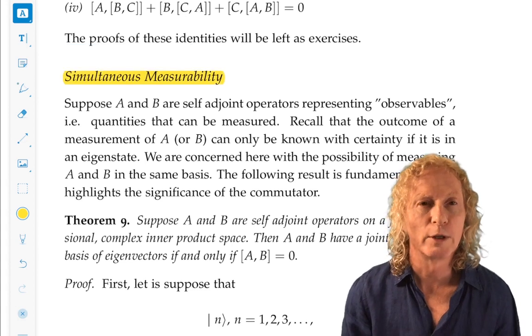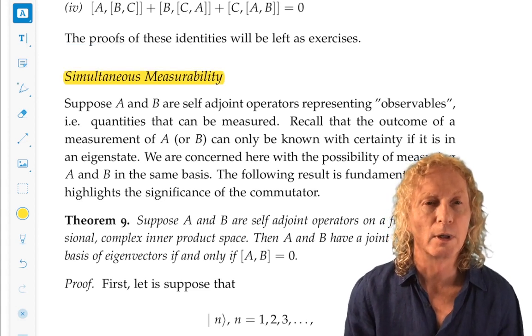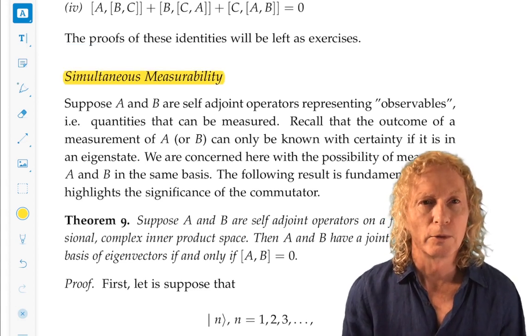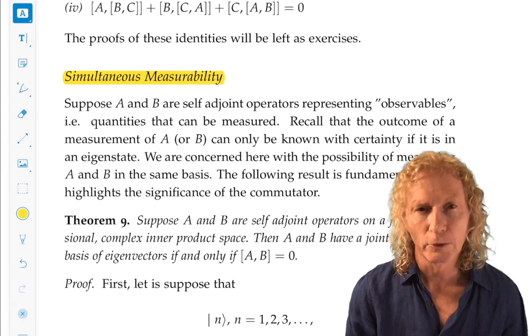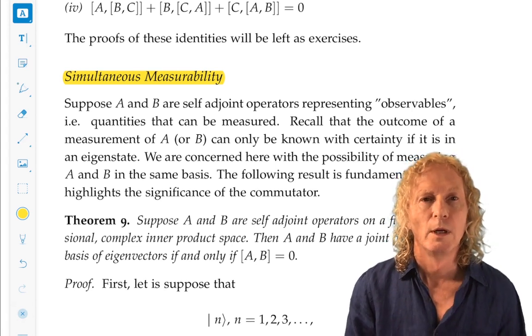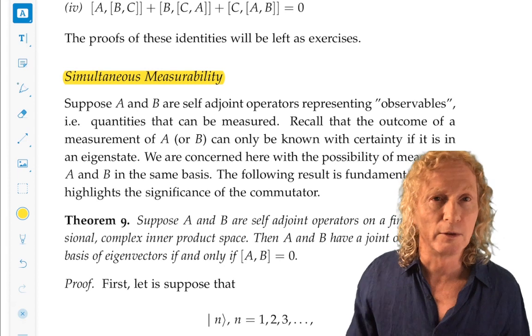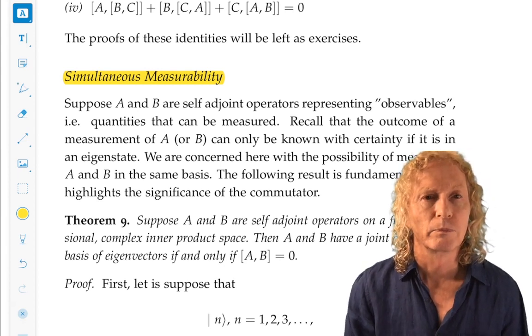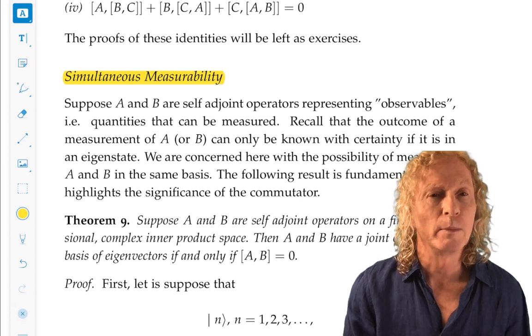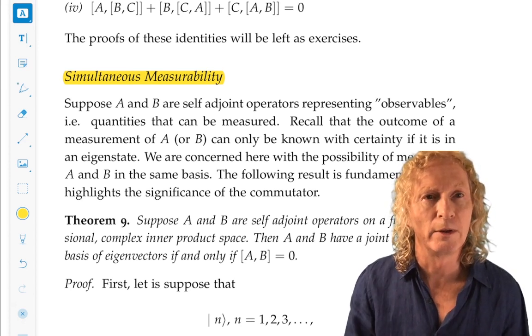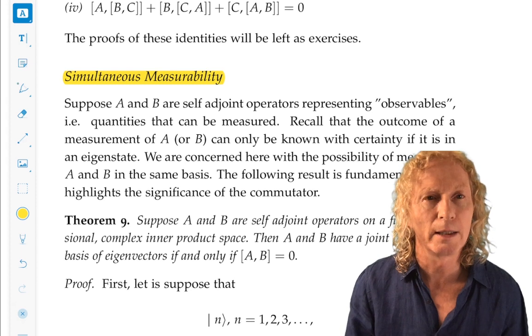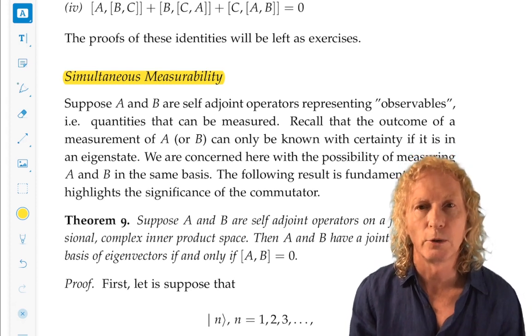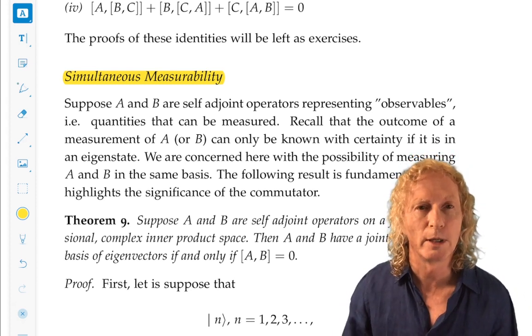Measurability is concerned with self-adjoint operators. They model observables in Quantum Mechanics. We make a measurement in a given state and we get an eigenvalue of that particular observable. And immediately after the measurement, the state becomes the eigenstate corresponding to that eigenvalue that was measured.